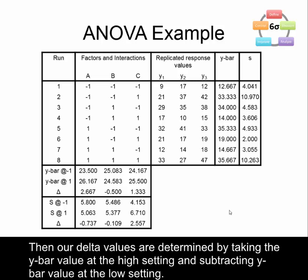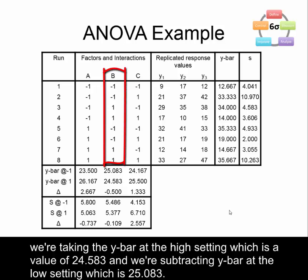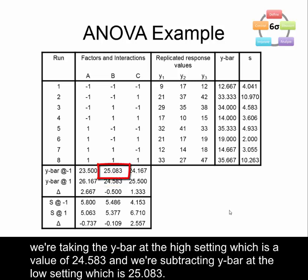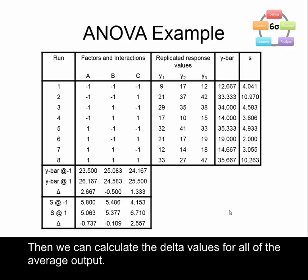Our delta values are determined by taking the y-bar value at the high setting and subtracting the y-bar value at the low setting. For example, with factor B we take the y-bar at the high setting of 24.583 and subtract the y-bar at the low setting of 25.083. So 24.583 minus 25.083 gives a value of negative 0.5. We can then calculate the delta values for all of the average output.